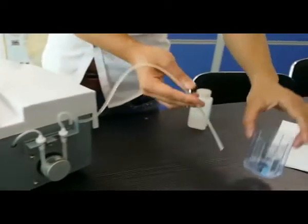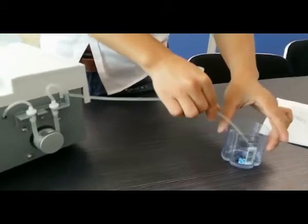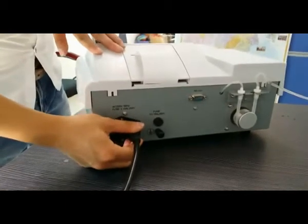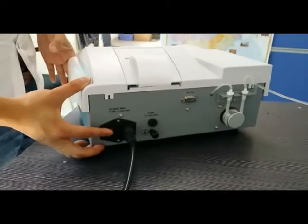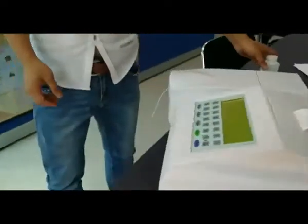Then put the waste tube into the waste bottle. Connect with the power line. Everything is ready. Then turn on the light. You can see the interface.